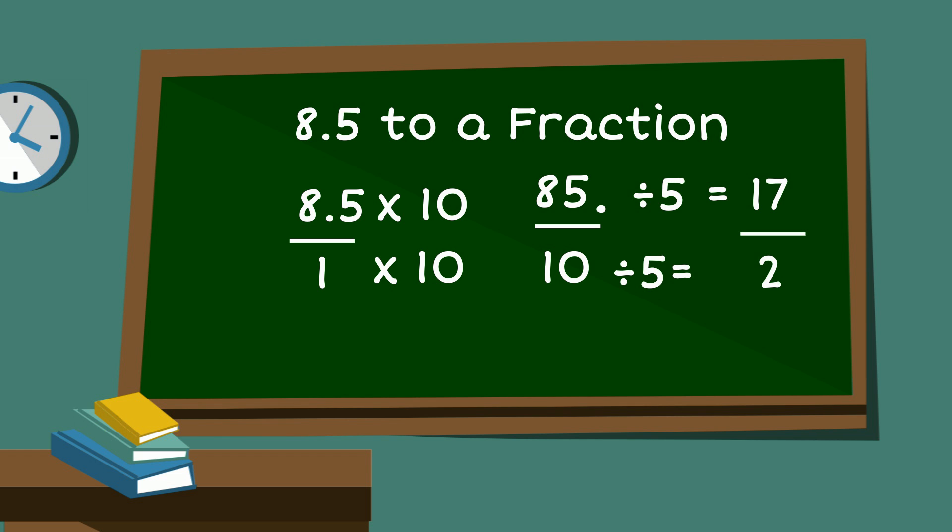So we now have an improper fraction that is simplified. If you would like, we can convert it into a mixed number by dividing 17 by 2,